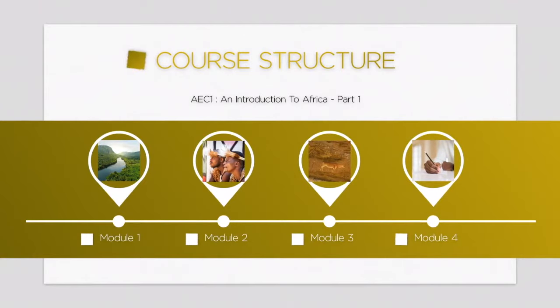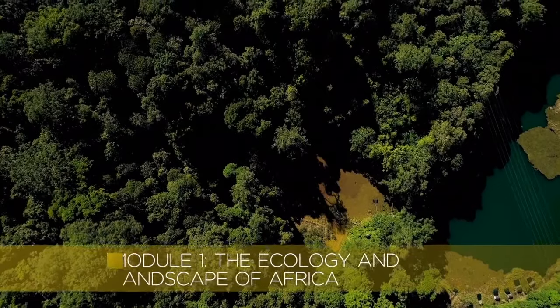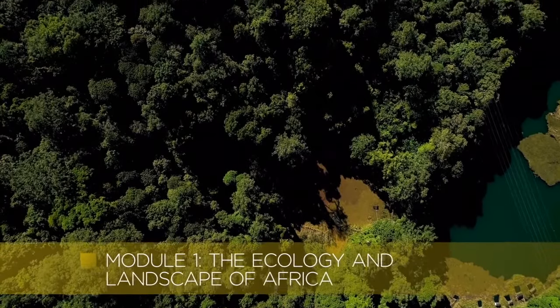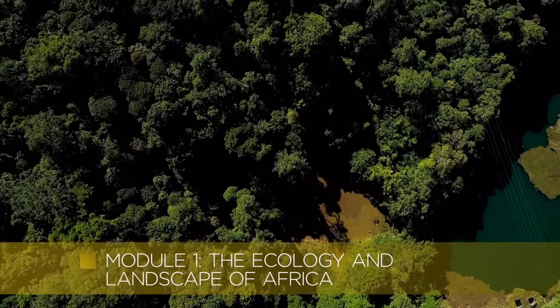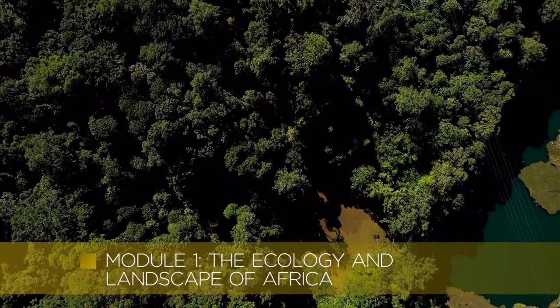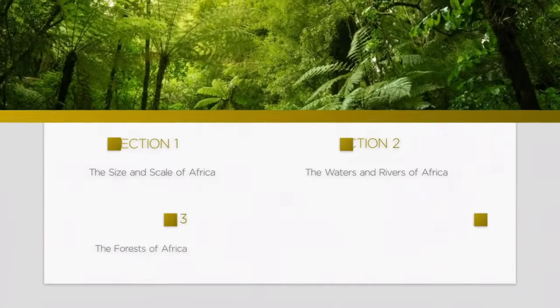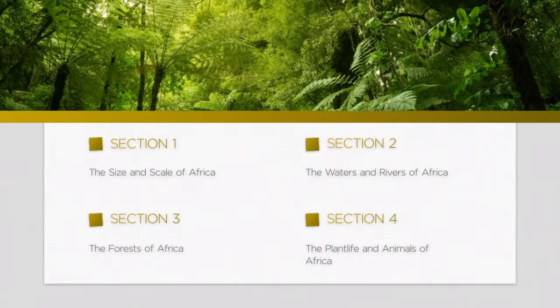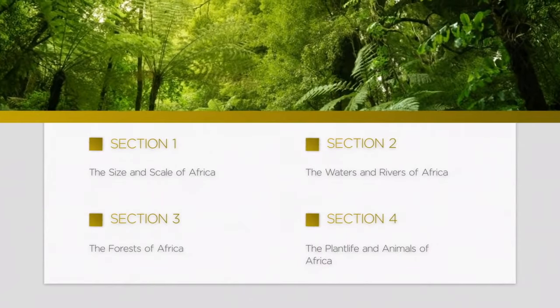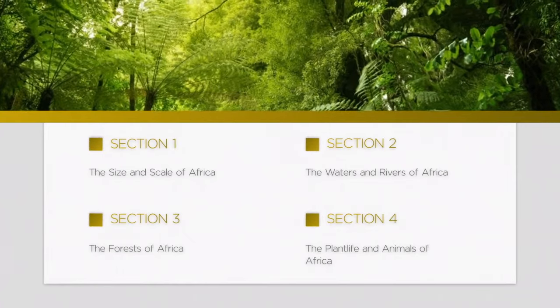Module 1: The Ecology and Landscape of Africa. This module is divided into four sections. Within this module, we will learn about the size and scale of Africa, the waters and rivers of Africa, the forests of Africa, and the plant life and animals of Africa.